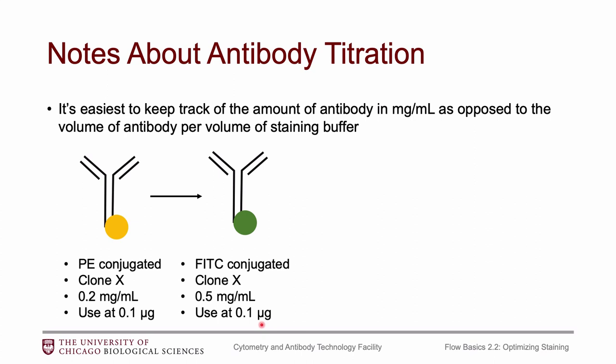Just know this is a shortcut. In an ideal scenario, I would re-titrate the new FITC antibody. But in general, most of the antibody titration has to do with the clone itself, and the fluorophore usually has less of a contribution. So as a shortcut, you can often get by using the same amount, but know that you might need to adjust the concentration if you change the fluorophore.